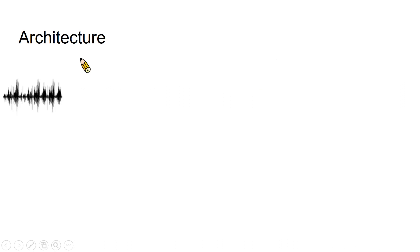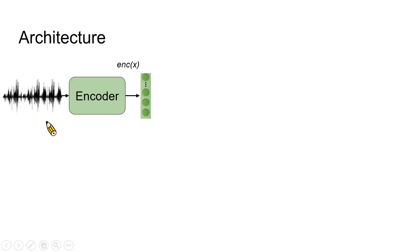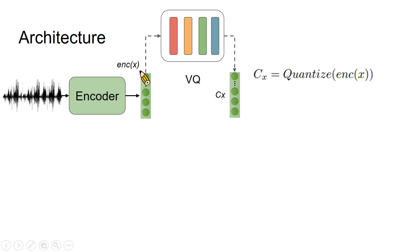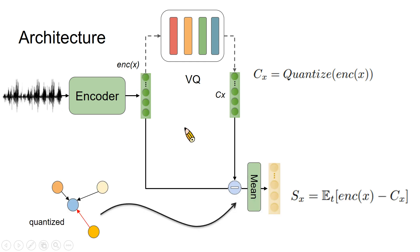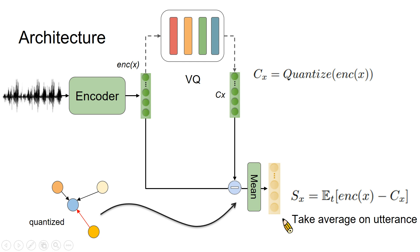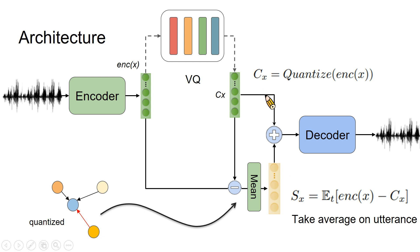This is our model architecture overview. First, we feed the audio signal into the encoder to get the encoder output, which is the pre-quantized vector. We then quantize it to get the content embedding. Simultaneously, we subtract the content embedding from the encoder output to get the speaker embedding, and take the average over the utterance since speaker embedding is global information. Then we combine content embedding and speaker embedding as input to the decoder. In the training phase, we minimize the spectral reconstruction loss between input and output.